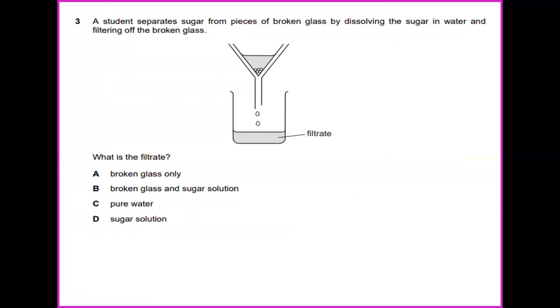A student separates sugar from pieces of broken glass by dissolving the sugar in water and filtering off the broken glass. So the question is, what is the filtrate? The sugar will dissolve in the water and passing the solution through a filter paper will remove the remaining glass. So the filtrate here, the answer will be sugar solution.